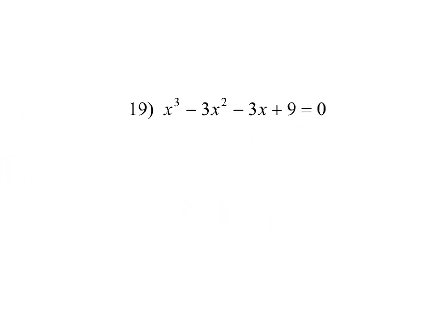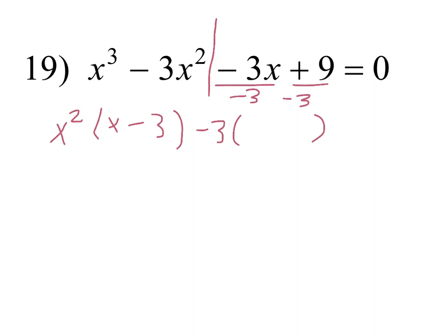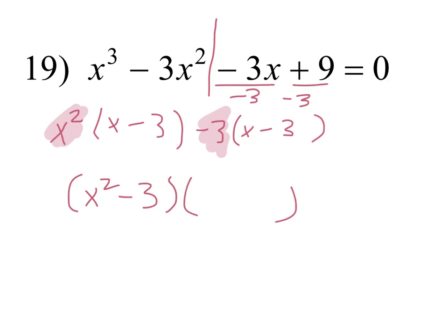Let's do number 19. First we need to split it in half. What can we take out of our first half? x squared. Remember, we take out the greatest common factor — since this has 3 x's and this has 2 we can take out 2. What do we have left? x minus 3. Now what can we take out of our second half? Negative 3. When we divide both by negative 3, what are we left with? x minus 3. So we take x squared minus 3 in one parenthesis and x minus 3 in the other.